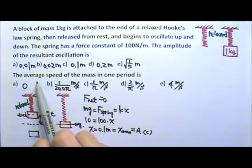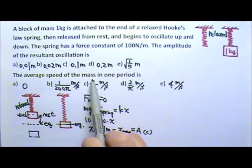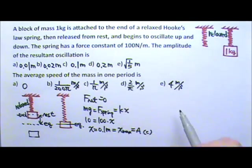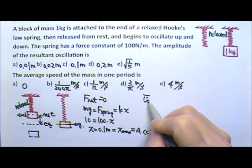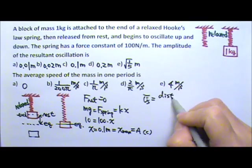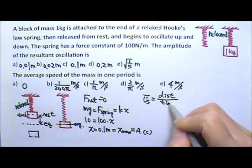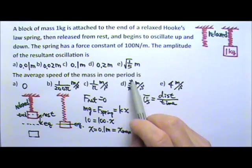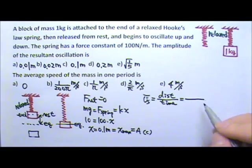Then we need to find the average speed of the 1 kg in one period. To find the average speed, by definition, it is the distance traveled divided by the time.